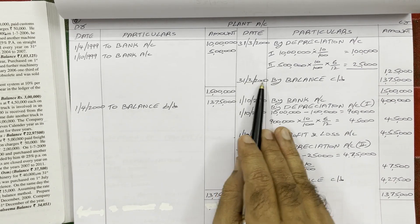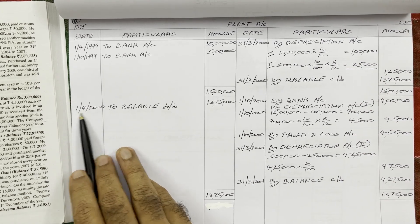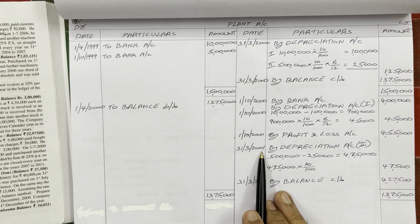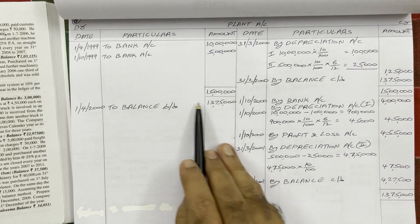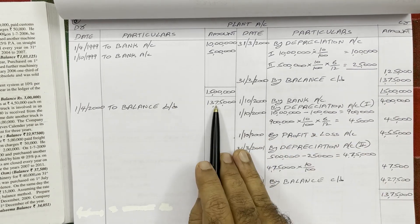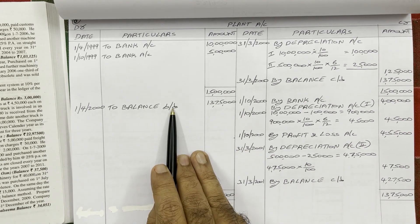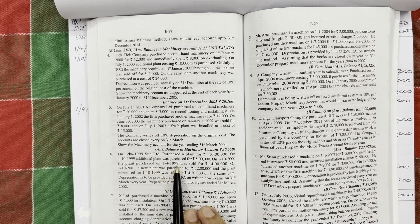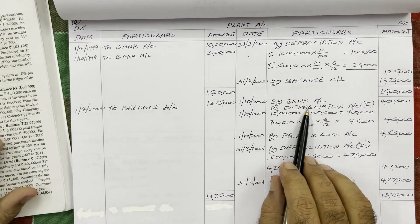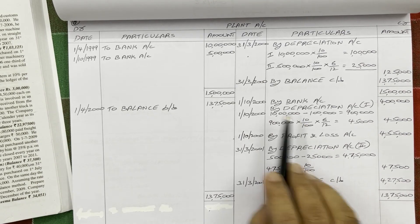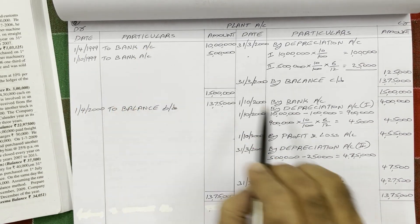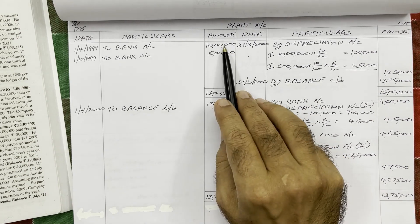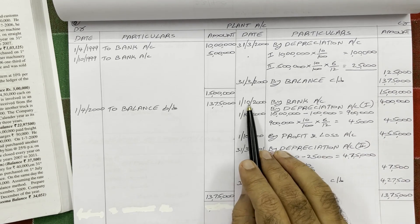Second year starts 1st April 2000 and ends 31st March 2001. Bring the balance to the debit side as balance brought down: 13 lakh 75,000. In the second year, on 1st October 2000, the plant purchased on 1st April 1999 — the first asset — was sold for 4 lakh rupees. When selling an asset, show it on the credit side: 1st October 2000, by Bank Account, 4 lakh rupees.